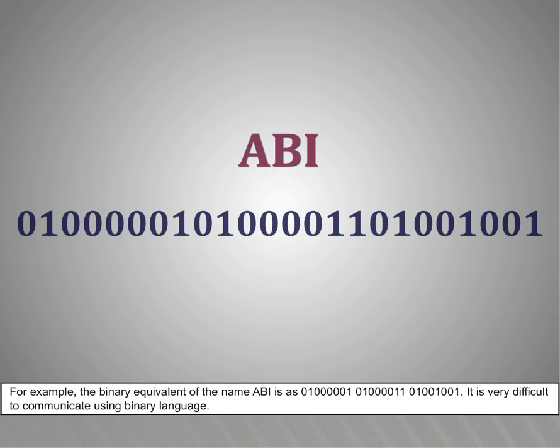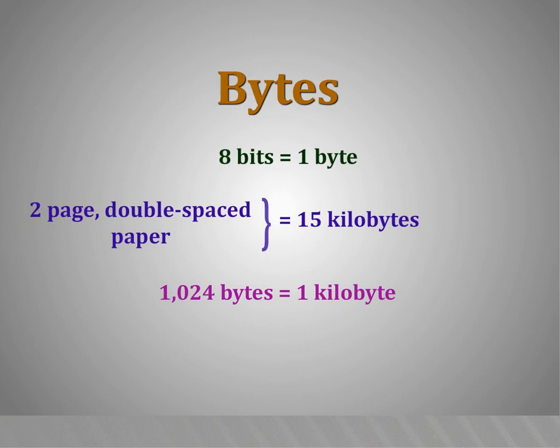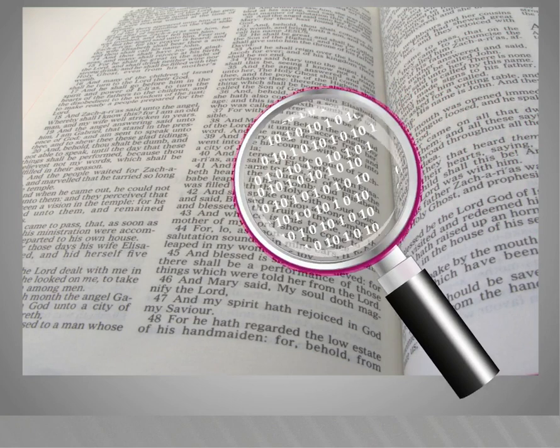It is very difficult to communicate using binary language. Now, remember, 8 bits is equal to 1 byte. A 2-page double-spaced document is about 1000 characters and about 15 kilobytes. 1024 bytes is 1 kilobyte. This is what computers can actually understand.